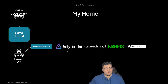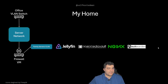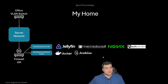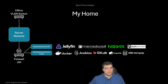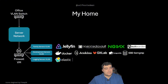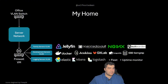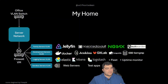To keep things organized, I structured the server network into different segments. The first is the family server VLAN, which consists of Jellyfin as a media server — or Plex as an alternative — OpenMediaVault for the NAS solution and internal file sharing, Nginx as a reverse proxy, and Vaultwarden for password sharing. The second is the development server VLAN, with Docker containers, Jenkins, GitLab, PostgreSQL and other databases, and static code analysis tools. The third is the logging and monitoring network, which includes Elasticsearch, Kibana, Logstash, Fleet Manager, and uptime monitors.